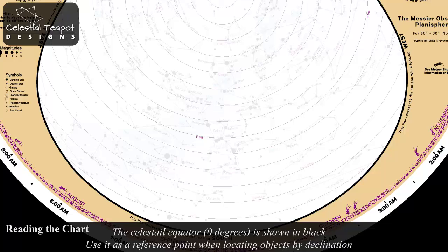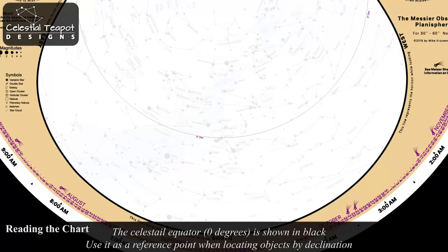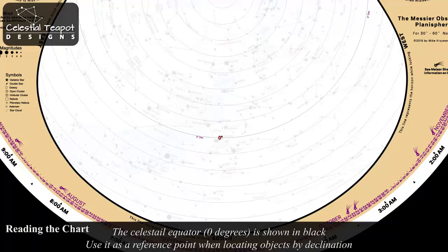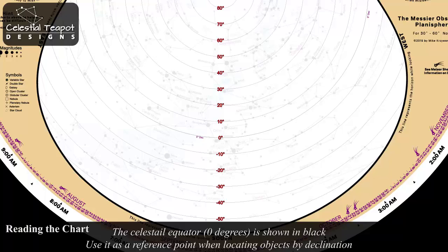The celestial equator, or zero degrees in declination, is shown in black. Above this line, towards the center of the chart, declination increases by 10 degrees per circle. Below this line, declination decreases.